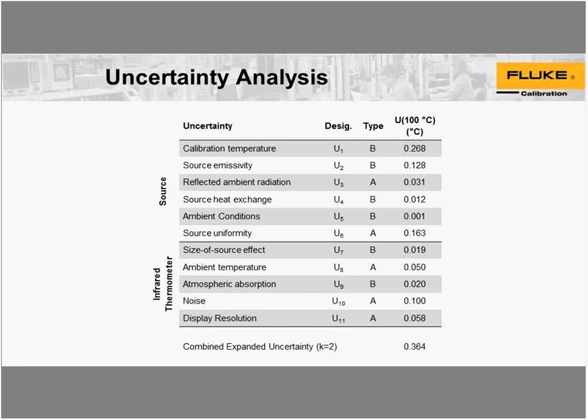I will not get deep into the uncertainty analysis for time purposes — I could probably spend another hour on this subject. This uncertainty analysis includes uncertainties listed in the ASTM standard, which are based on literature from BIPM for radiation thermometry uncertainties. This uncertainty analysis is not for a specific model, a specific source, or a specific laboratory — so don't use this in your own laboratory. Go out and compute your own uncertainties for your own calibration setup. That said, the uncertainty shown here is probably pretty typical for calibrating an infrared thermometer with a 4180 or 4181.